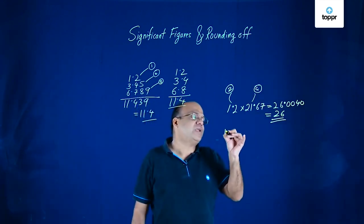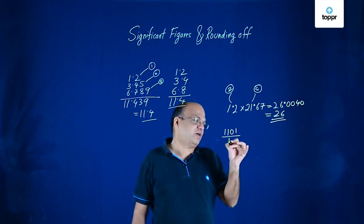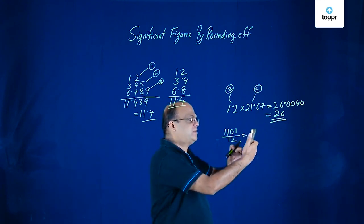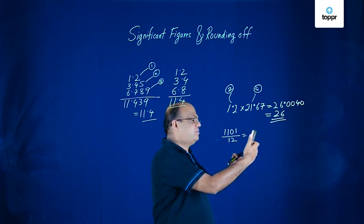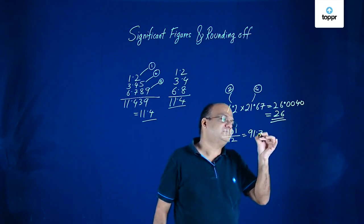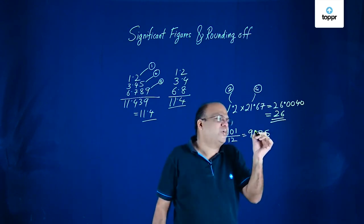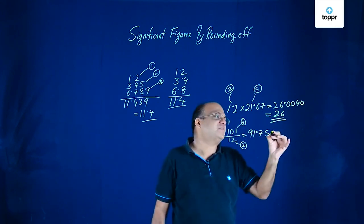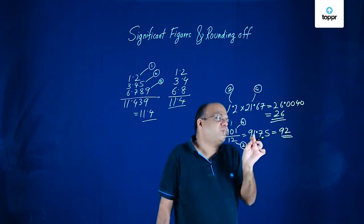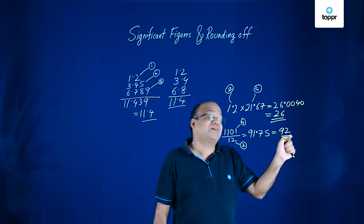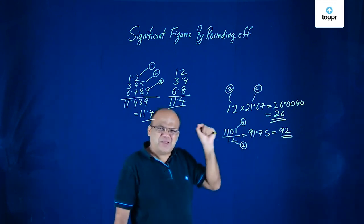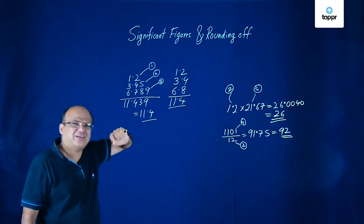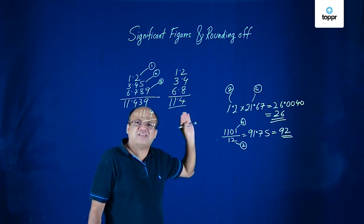Suppose we have to divide 1101 by 12. Using a calculator, we get 91.75. But we must take care of significant digits. 1101 has 4 significant digits and 12 has 2. The lesser is 2, so the final answer should also have 2 significant digits. We round off 91.75 — the digit after 2 significant digits is more than 5, so we increase the preceding digit by 1 — giving 92. In multiplication and division, don't worry about the decimal point; look at the number with the least significant digits, and the final answer should have that same count.